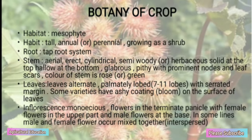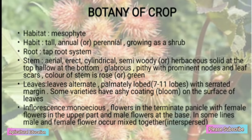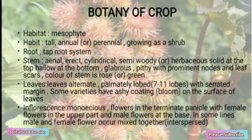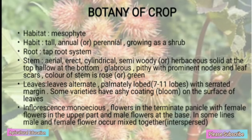Root: Taproot system. Stem: Arial, erect, cylindrical, semi-woody herbaceous, solid at the top and hollow at the bottom. Leaves: Leaves are alternate, lobed with 7-11 lobes with serrate margin. Inflorescence: Monoecious flowers in the terminal panicle with female flowers in the upper part and male flowers at the base. In some lines, males and female flowers occur mixed together.